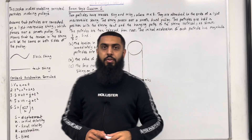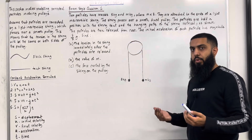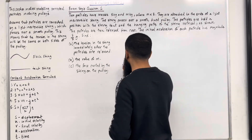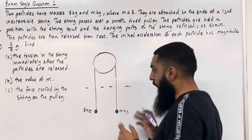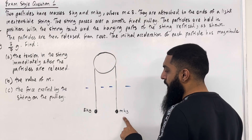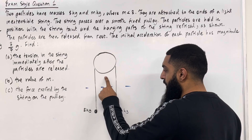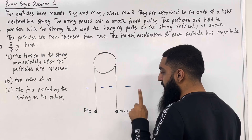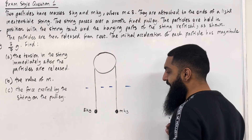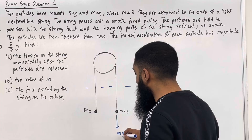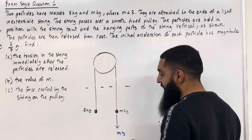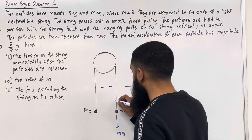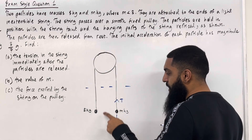Let's begin with a force diagram. Now with connected particles we need to create a split, which will help me identify all the forces acting on the m kg particle separately, the pulley separately, and the 3 kg particle separately. Let's start with the m kg particle. We have the weight of this particle acting vertically downwards, given by mg. Because of this weight we have a tension in the string for the m kg particle acting vertically upwards. Let's call it T.